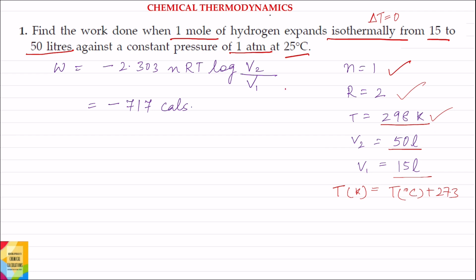Putting the values in this formula and solving, work done is equal to minus 717 calories.